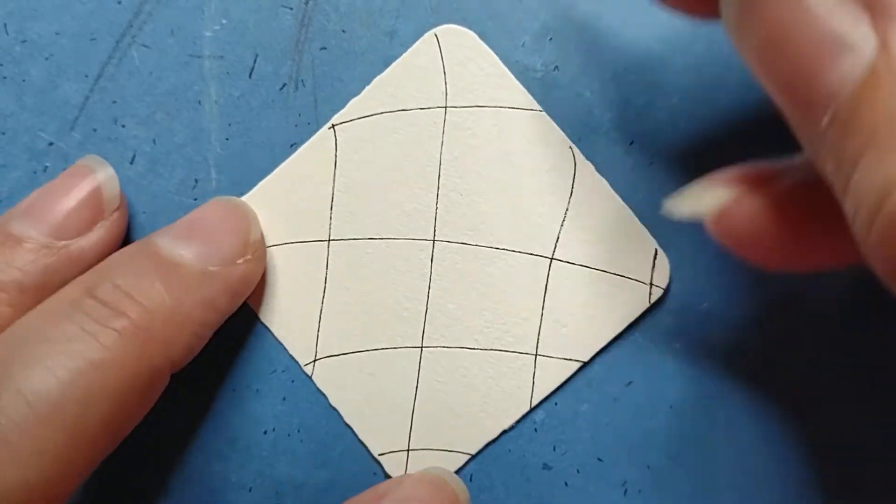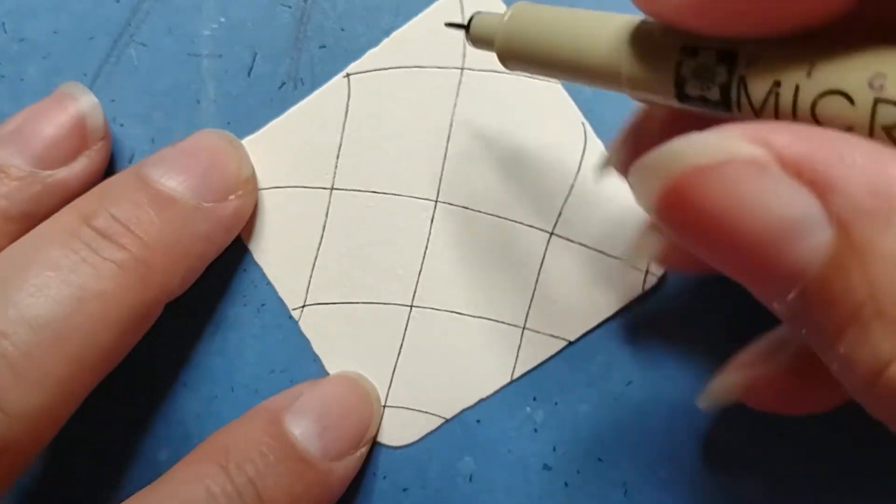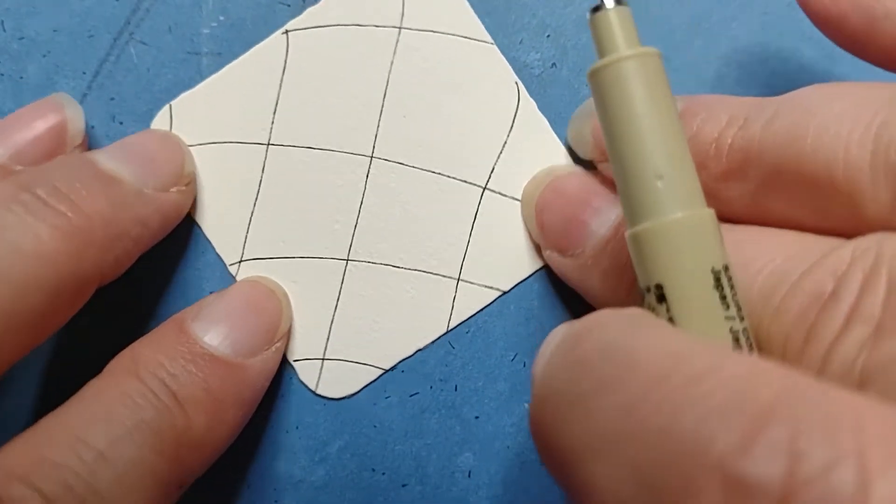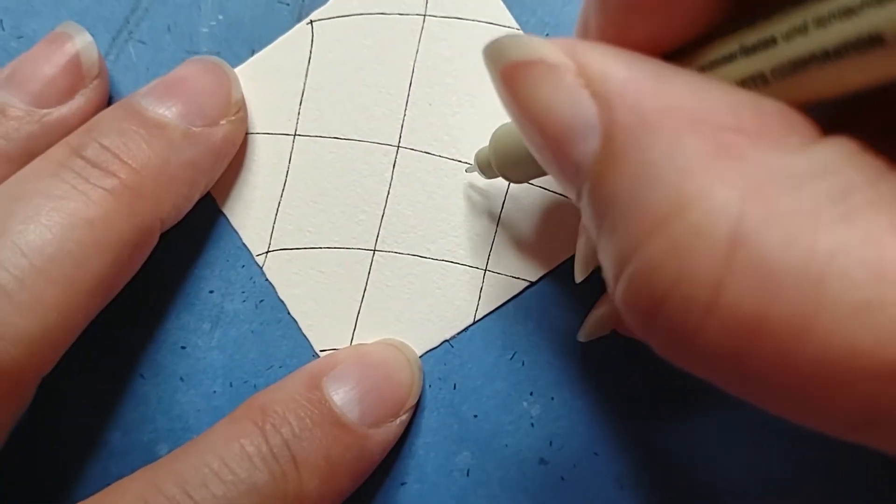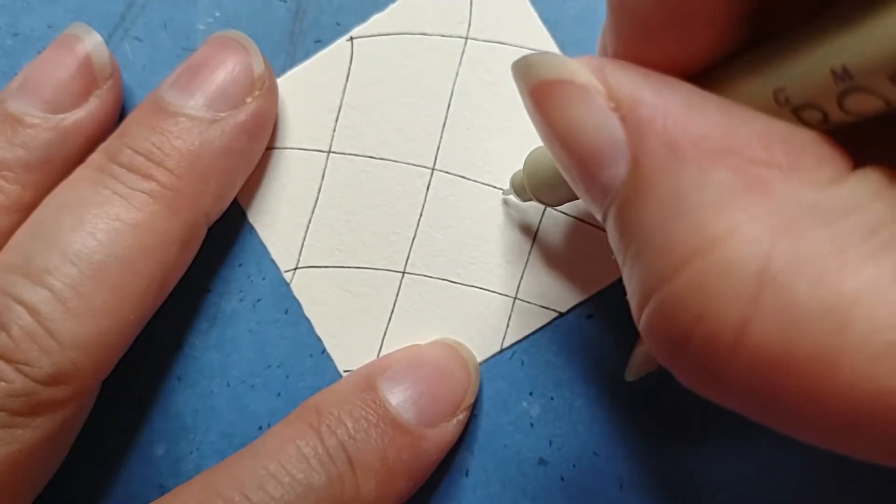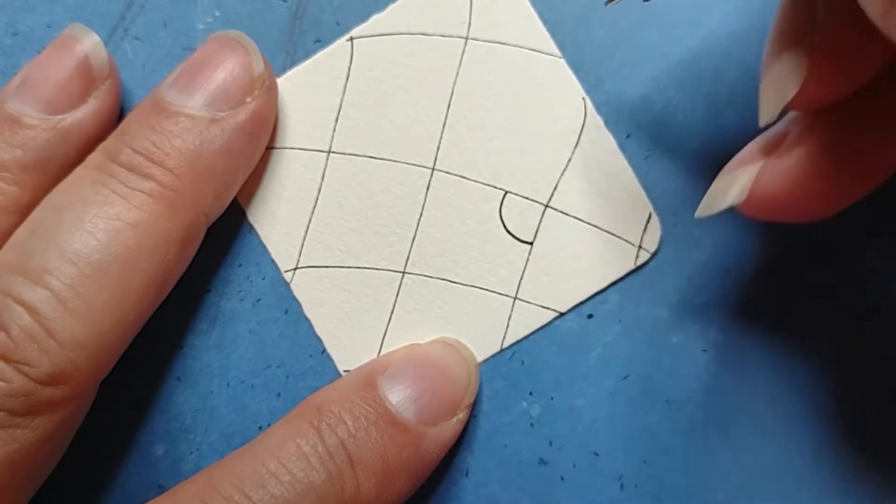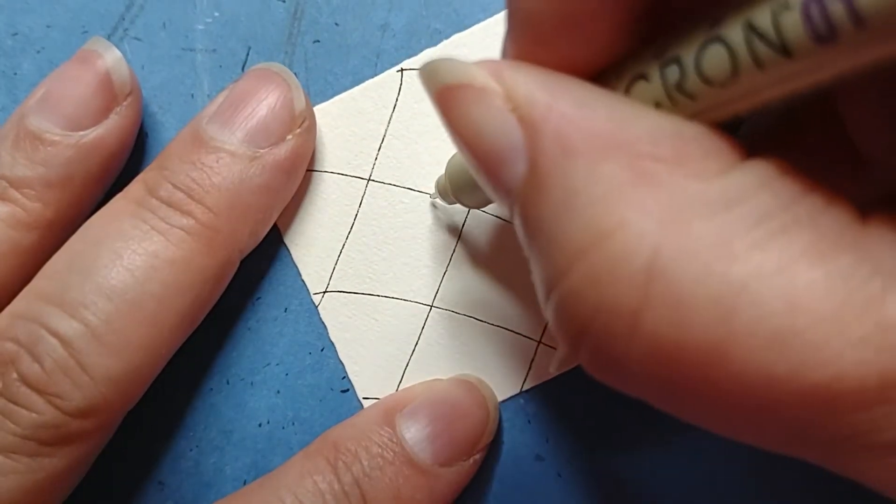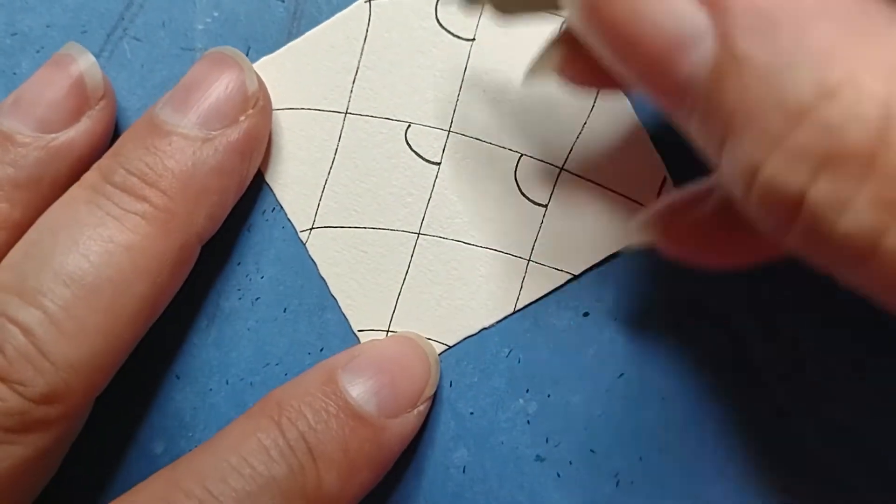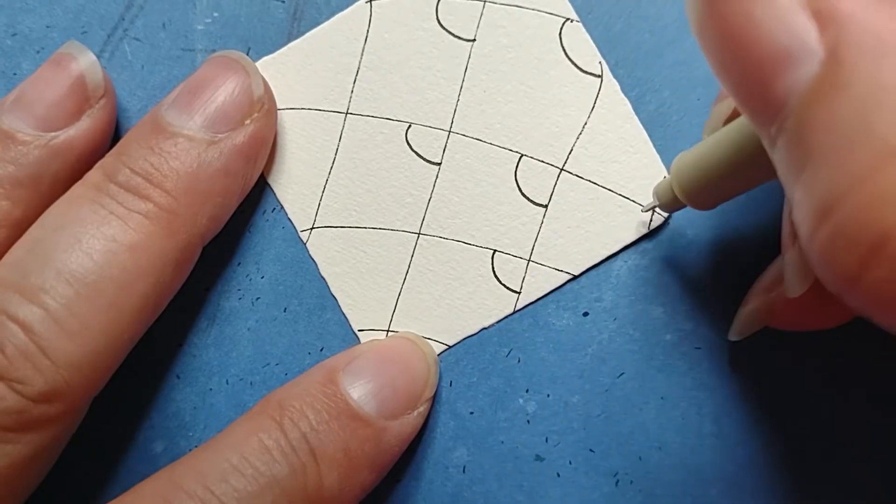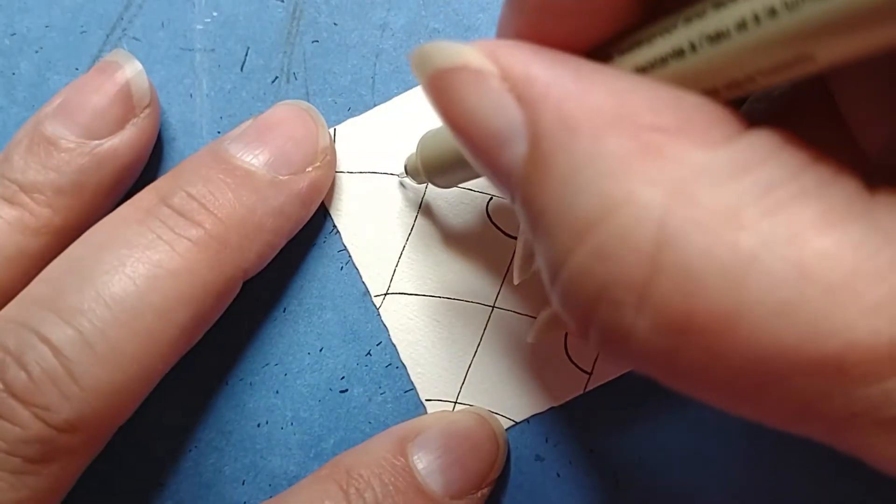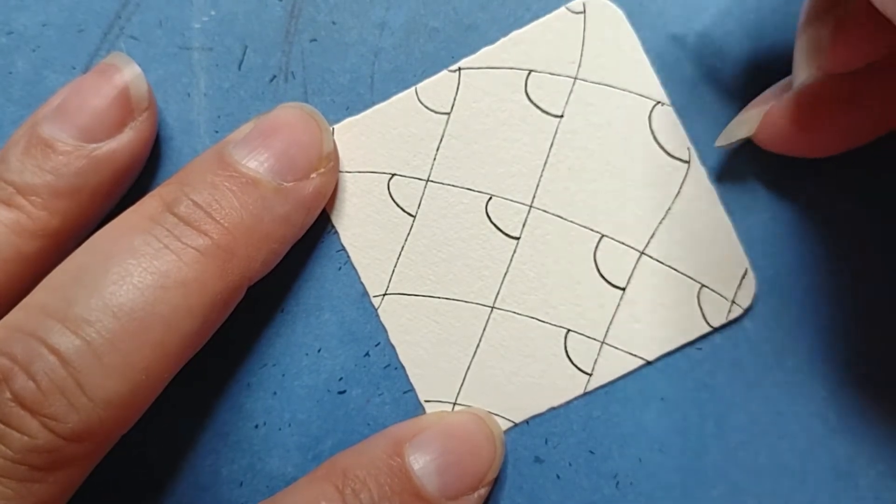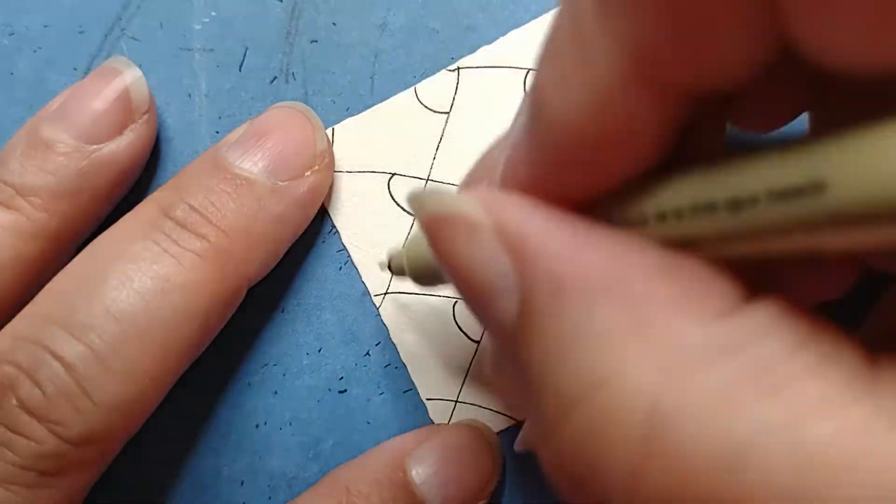So this one starts after you get your grid set. And this one is more of a diamond grid like so, than it being a straight grid like that. So what we're going to do is in one of the corners, although if you drew it as a straight grid, it's all going to work out the same anyway. We're going to put a curved line in the right corner of each of the little boxes.